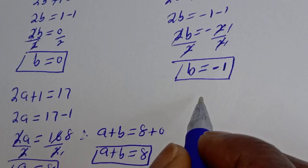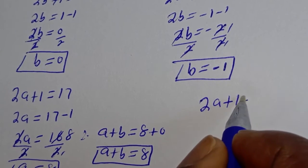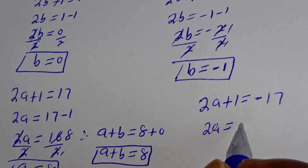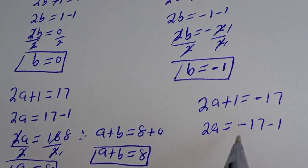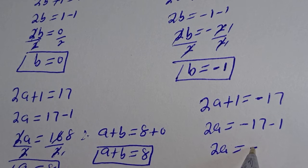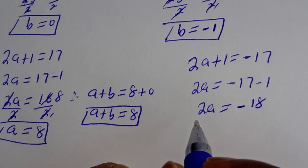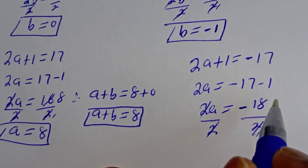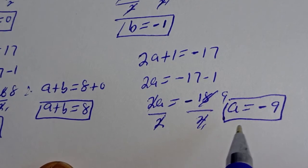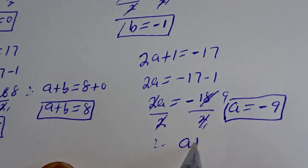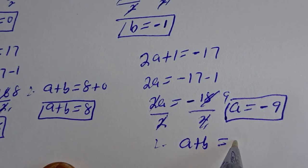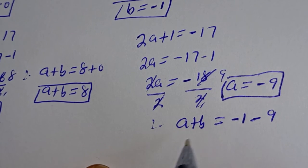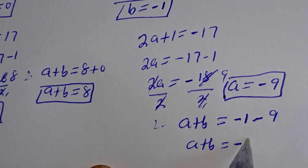Also from here, 2a plus 1 is equal to minus 17. Then 2a is equal to minus 17 minus 1, so 2a is equal to minus 18. Dividing by 2, a is equal to minus 9. Therefore, a plus b is equal to minus 1 plus minus 9, so a plus b is equal to minus 10.